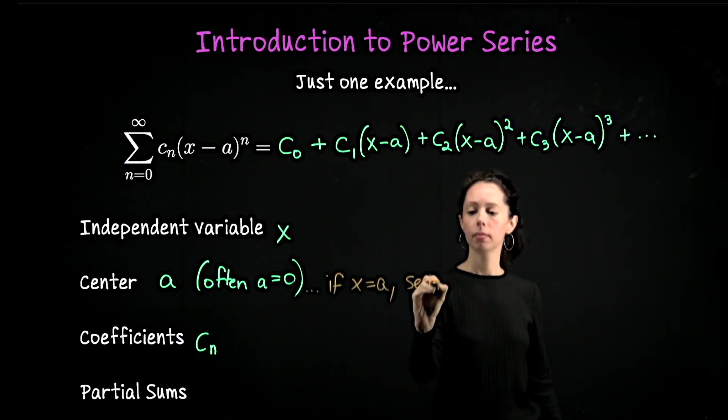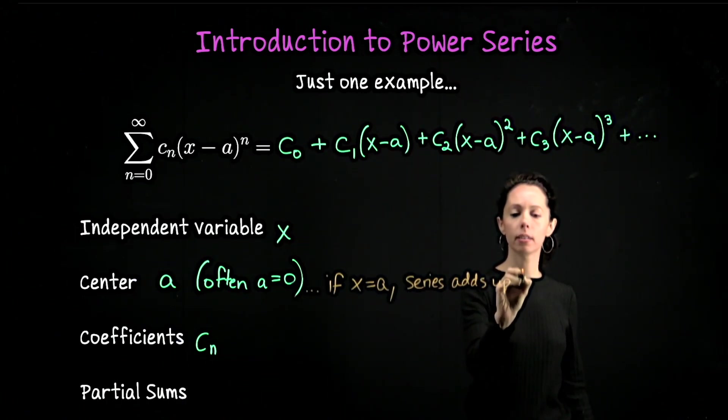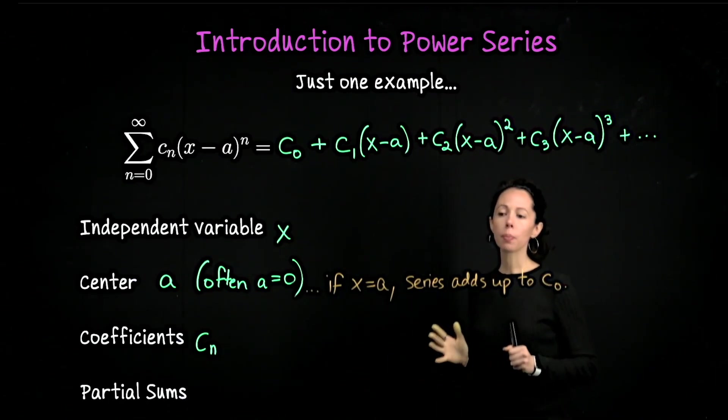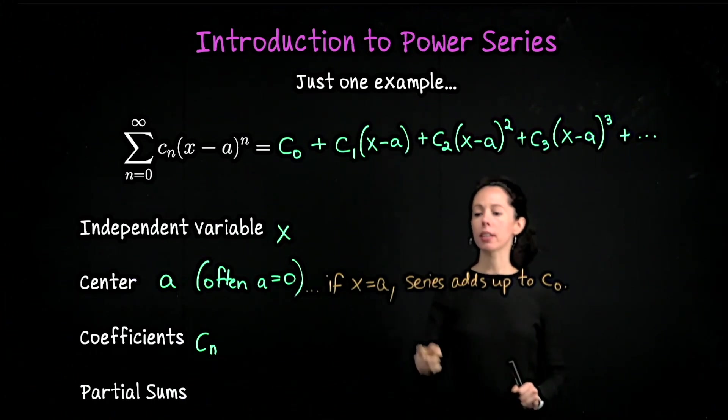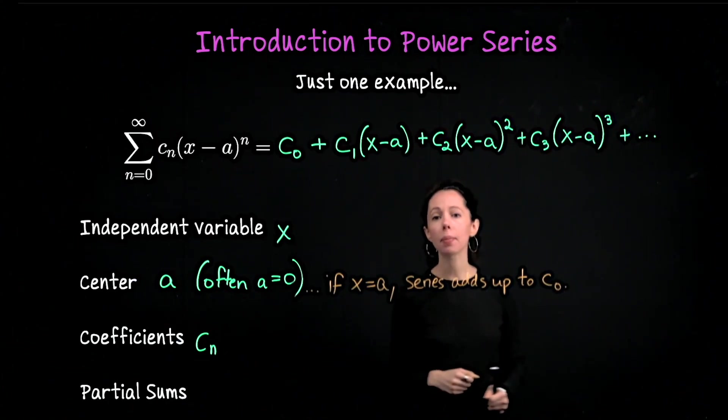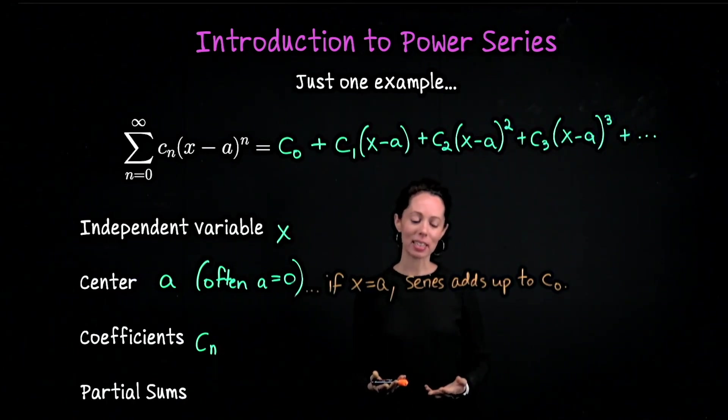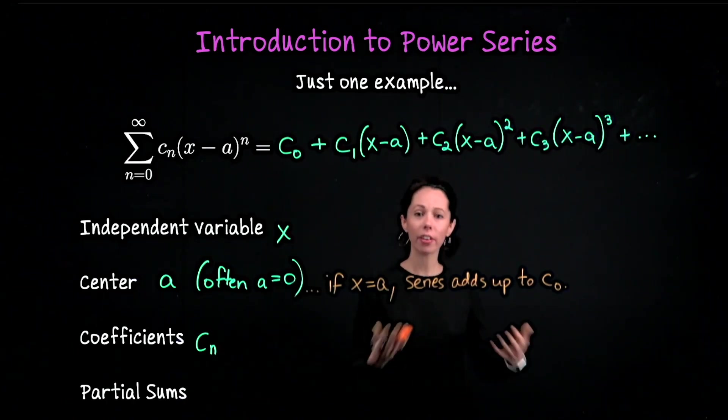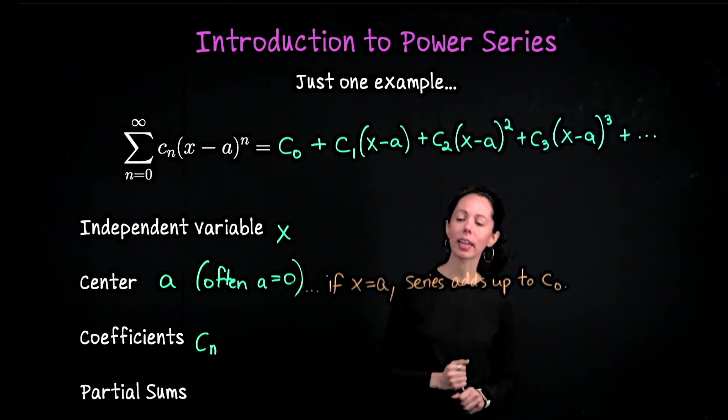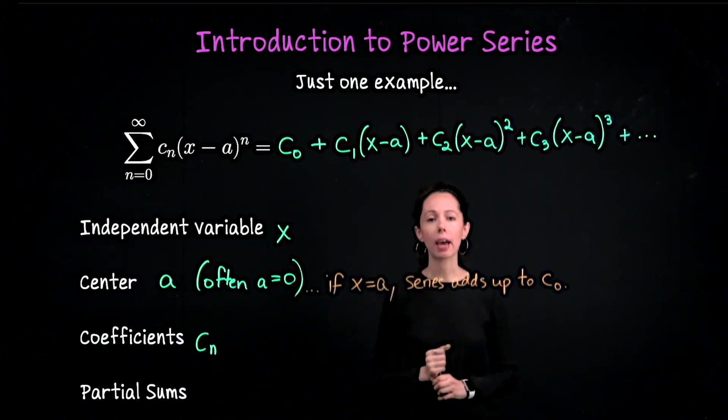So every power series at least converges at one value of x. Here's an x value that causes this sum to add up to something finite. In fact, the leading term. What we will look at is the question, are there other values of x that also cause convergence? So is this it? Probably not, because otherwise it wouldn't be a very interesting thing to study. What other types of x values might cause such a power series to converge? We will see that with our example.